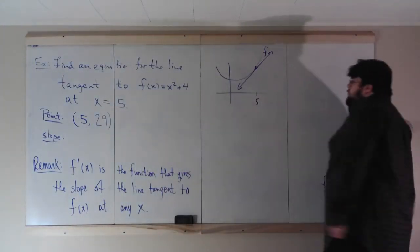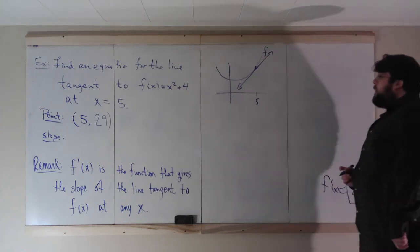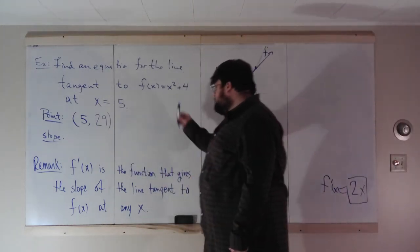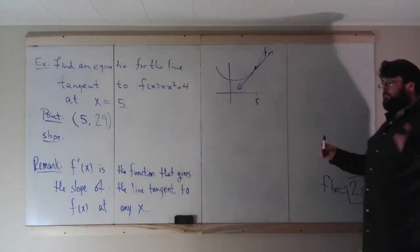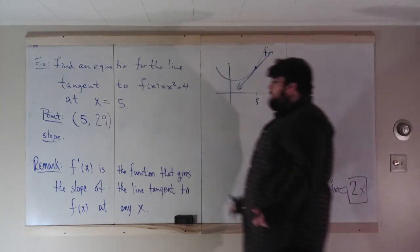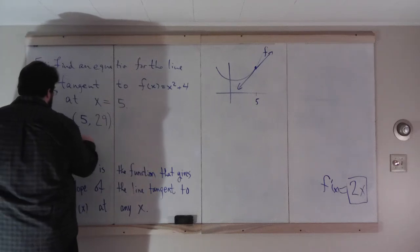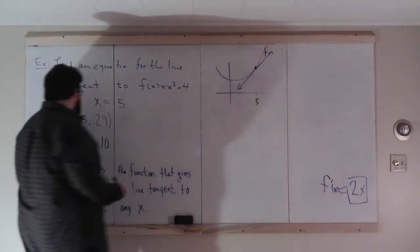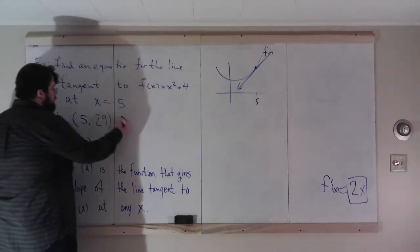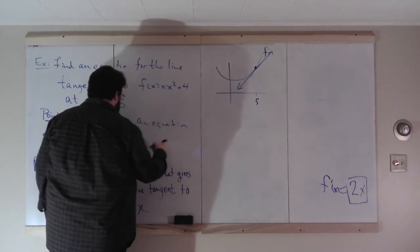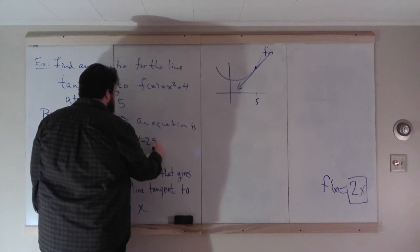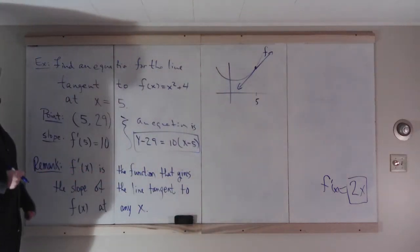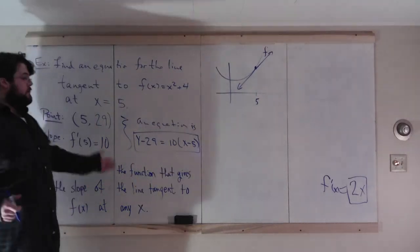How about the slope? That's pretty tough to do from the graph alone — possibly impossible. But remember, f-prime gives the slope of the line tangent to f at any point. If we want the slope at x equals 5, we need f-prime of 5. f-prime of x is 2x, so f-prime of 5 equals 2 times 5, which is 10. We have the point and the slope, so an equation for the tangent line is y minus 29 equals 10 times (x minus 5). So we can use the derivative to find slopes of tangent lines.